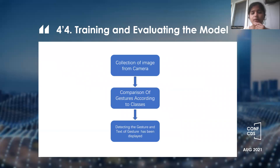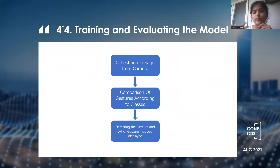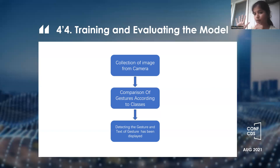First, we collect the image from the webcam. The system then compares the collected gesture with available gestures and gives an accurate result. For example, if we show the 'hi' sign, the system checks for that sign internally and gives the correct result. The last step is detecting the gesture and displaying the text of that gesture. After detecting a sign such as 'hi', the system displays the name or text of that sign on screen, making it easily understandable by normal people.